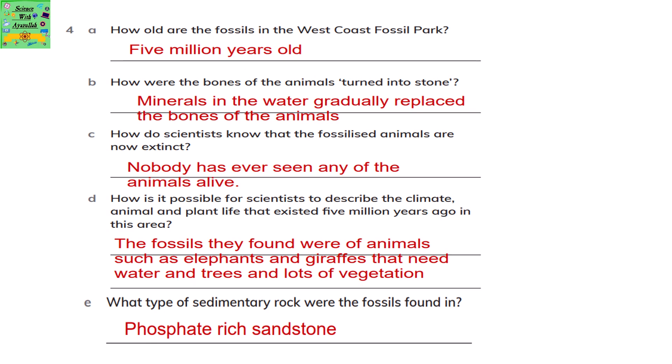How old are the fossils in the West Coast Fossil Park? They are around 5 million years old. How were the bones of the animals turned into stone? The minerals in the water gradually replaced the bones of the animals.